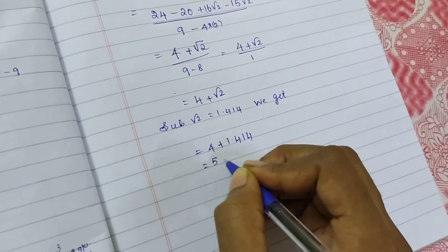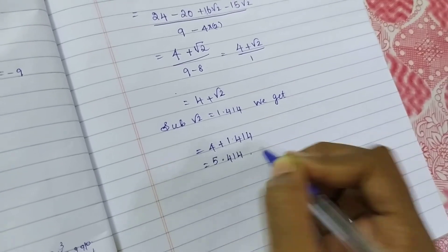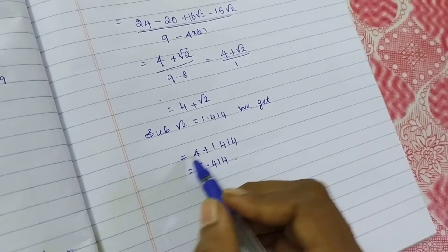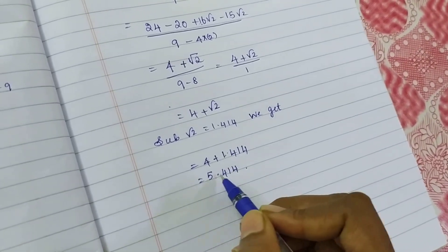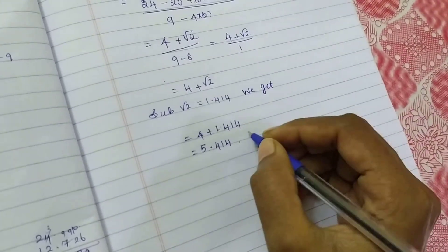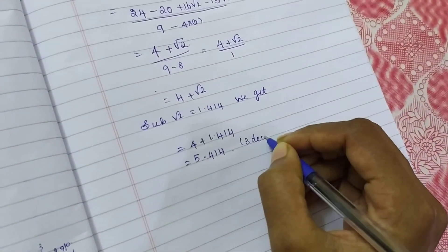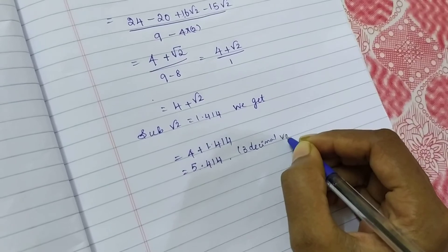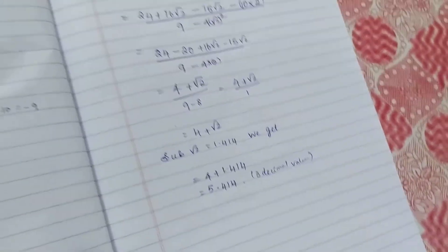So what do I have? 5.414. Because 4 plus 1, 5.414. That's it. That is my answer. They are asking for 3 decimal places. So 3 decimal value is solved. That's it.